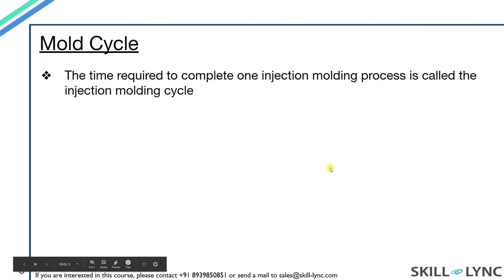Now, what is mold cycle? The time required to complete one injection molding process is called the mold cycle. There is no fixed formula for calculating this mold cycle time — it depends on a number of factors that I will be explaining in this slide.